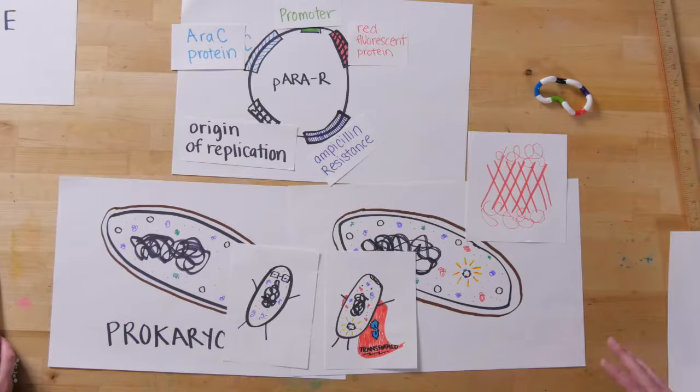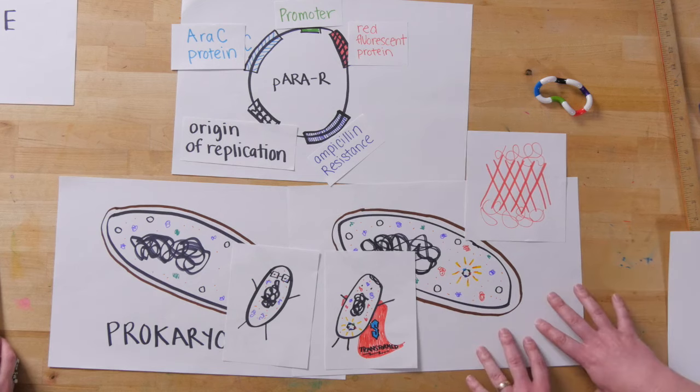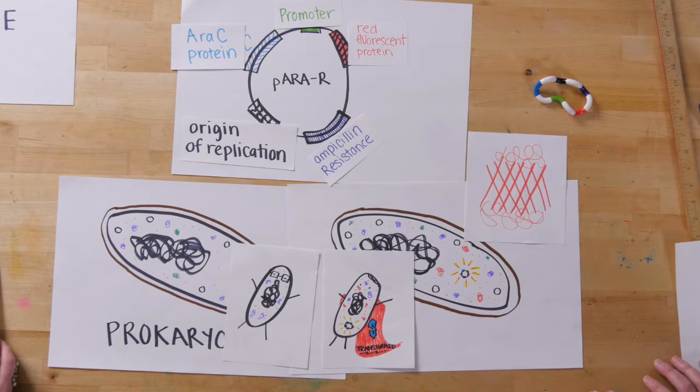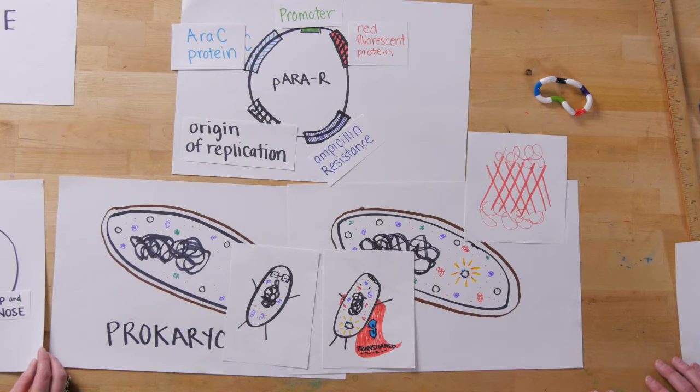What that allows us to do is have these cells resist ampicillin, which kills normal bacterial cells. So by having that ampicillin resistance, we can take our superbugs and have them survive a situation where we grow them in ampicillin. This is really important for selection methods, and this is what we actually use to select the bacteria that have our plasmid of interest.